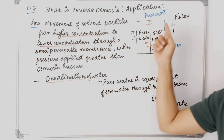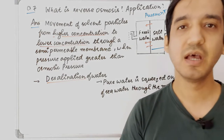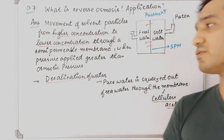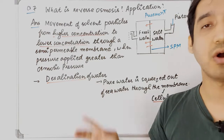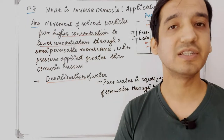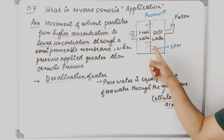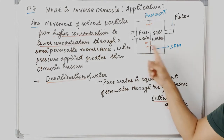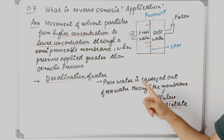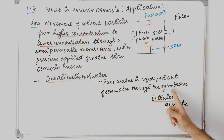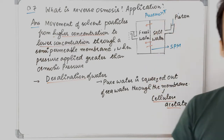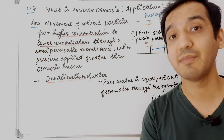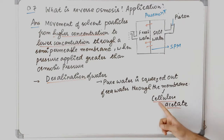Because of reverse osmosis, we can do desalination of water — removing salts from sea water. Pure water is squeezed out from sea water through the membrane by applying pressure greater than osmotic pressure. The membrane used in this process is called a cellulose acetate membrane.